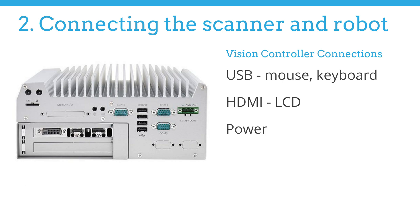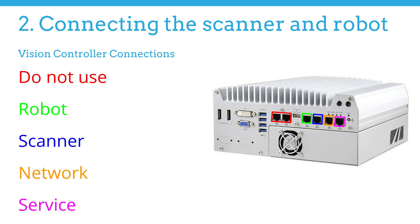There is still the possibility of accessing the vision controller directly until the next release. You may connect peripherals using the back of the device, where the power supply is also located. The other side holds a number of network interface ports, with a label above each port guiding the user as to where to connect each device. Please pay particular attention to ports dedicated to the robotic controller and the Faux-XI scanner — color coding can help identify the right ports if labels are damaged.